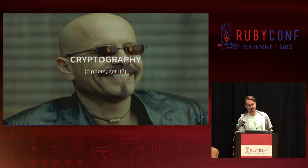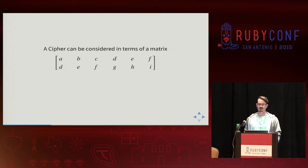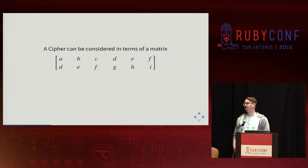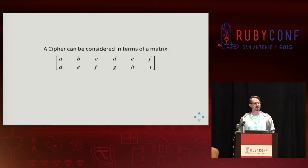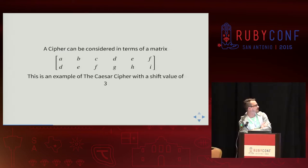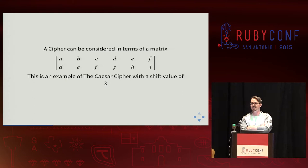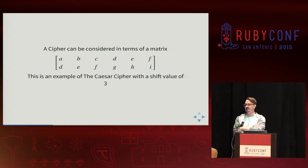You can also use matrices in cryptography — ciphers, get it? A cipher can be considered in terms of a matrix. Here we have a cipher — this is Caesar's substitution cipher with a shift value of three. Given an input A, that letter gets shifted to D, et cetera. This is also the Paleolithic age of cryptography — if you guys are storing passwords like this in a database, leave now.